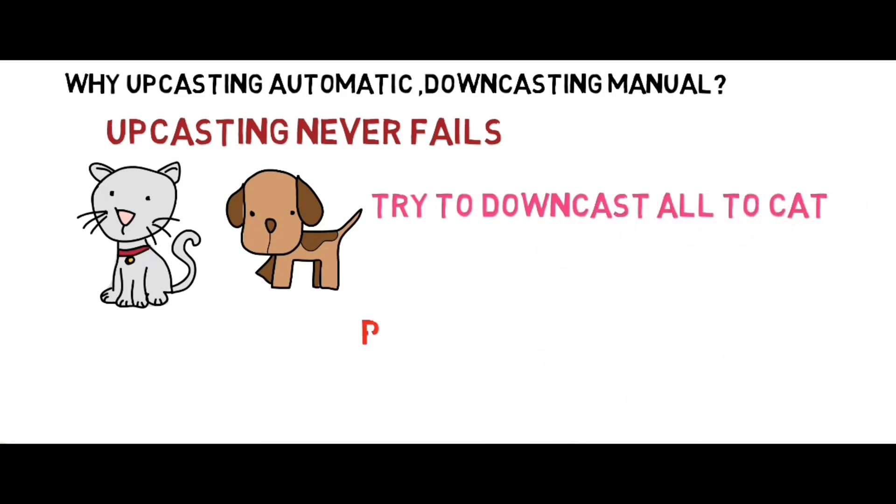Maybe there is a chance that some of the animals are actually dogs or other animals. While downcasting, the process fails. So downcasting is manual.